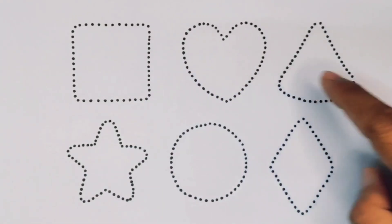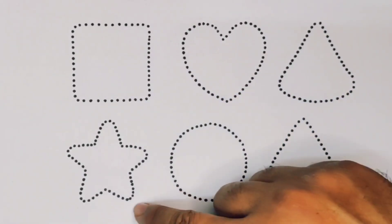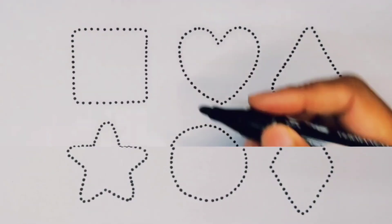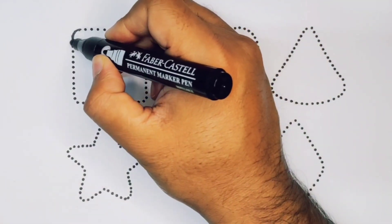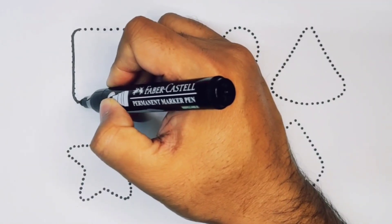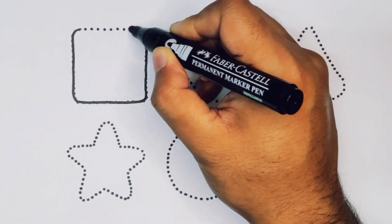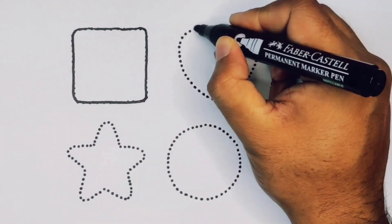Heart, triangle, star, circle, and rhombus. First we're going to draw the shapes: square, heart.